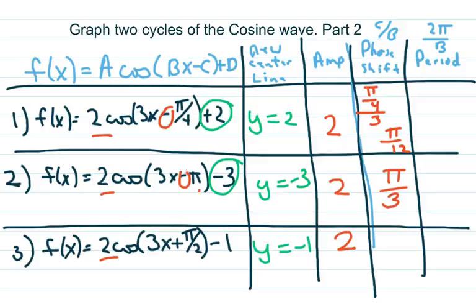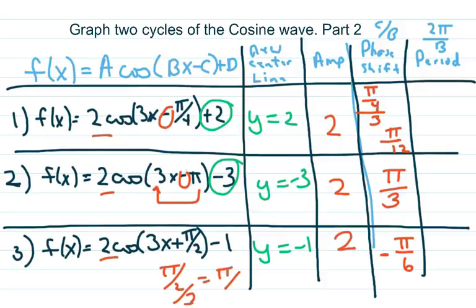Just taking this and dividing it — the way I see it, you take the right and divide by the left. And this one's going to be negative pi over 6, because pi over 2 divided by 3 equals pi over 6, but it's negative because this is positive. And then the period is 2 pi over b. Here's our b. In this case, they're all 3, so that's going to be 2 pi over 3.